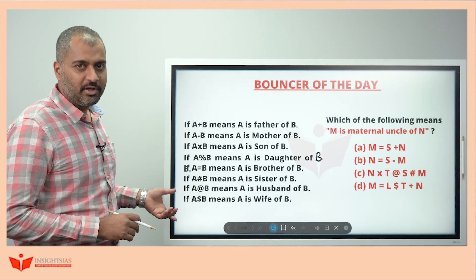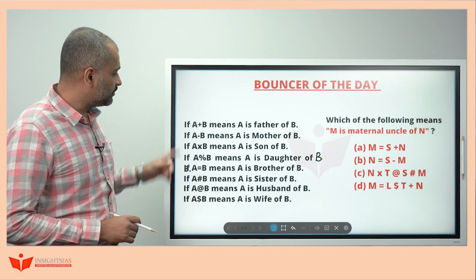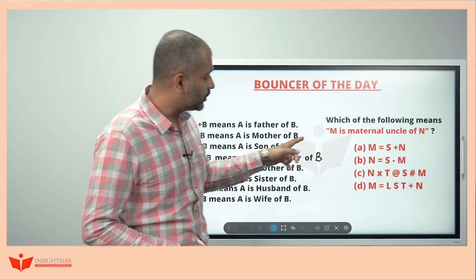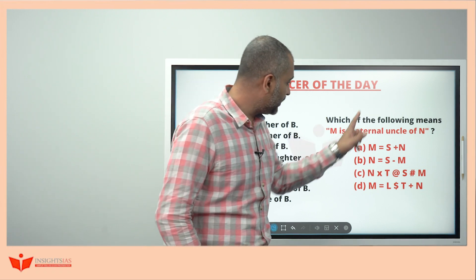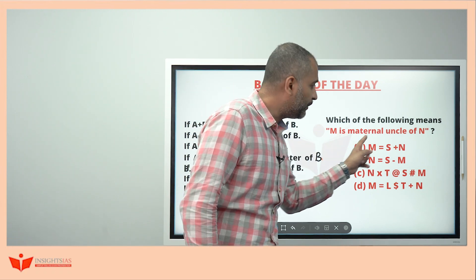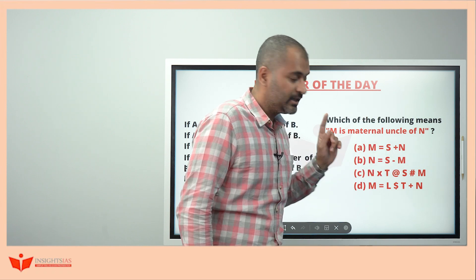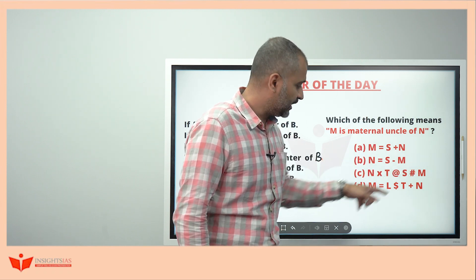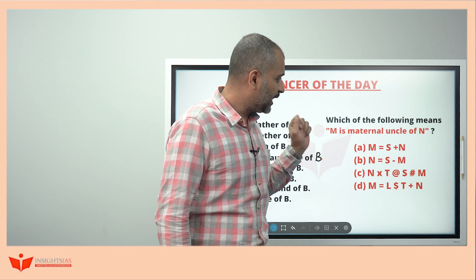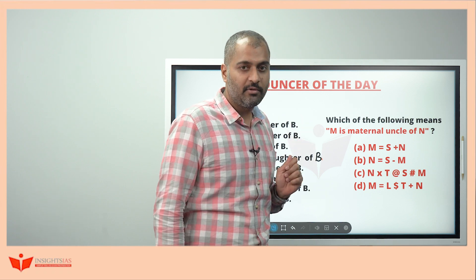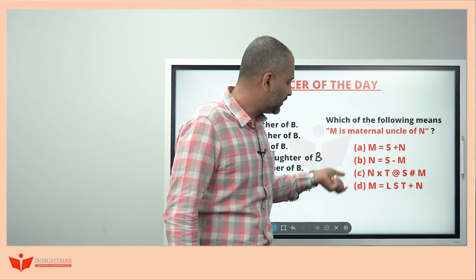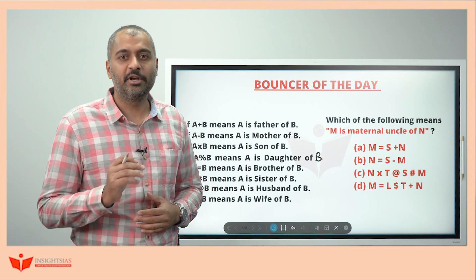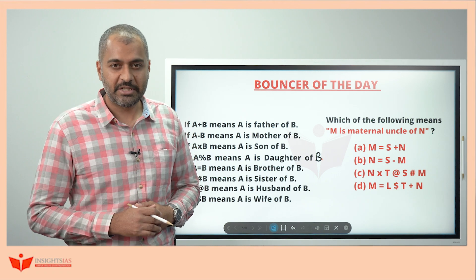The topic remains the same — blood relationship with the same codes. This is the bouncer question: which of the following means M is the maternal uncle of N? Try to find the answer and put it in your comment section.